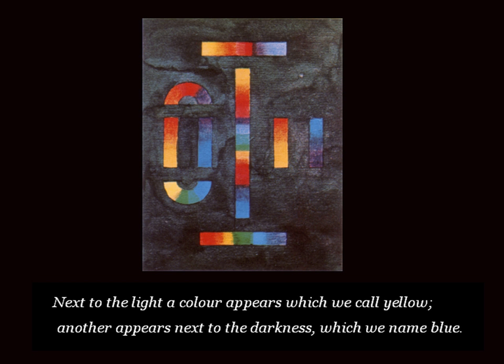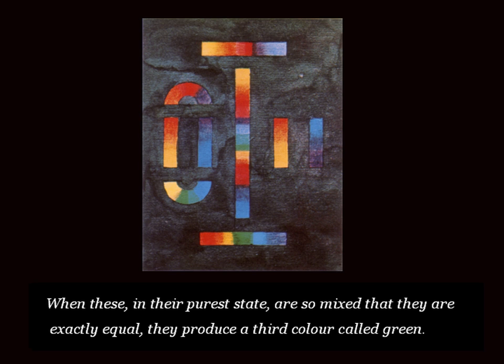Next to the light, a color appears which we call yellow. Another appears next to the darkness, which we name blue. When these in their purest state are so mixed that they are exactly equal, they produce a third color, called green.